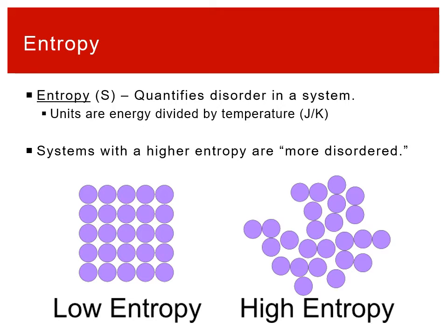We're going to spend some time talking about what exactly that means. When we talk about systems that are disordered, we can look at two examples. Something that is ordered would look like circles in a repeating pattern — that would be a low entropy system. The same number of circles arranged seemingly randomly is what we mean by disordered.